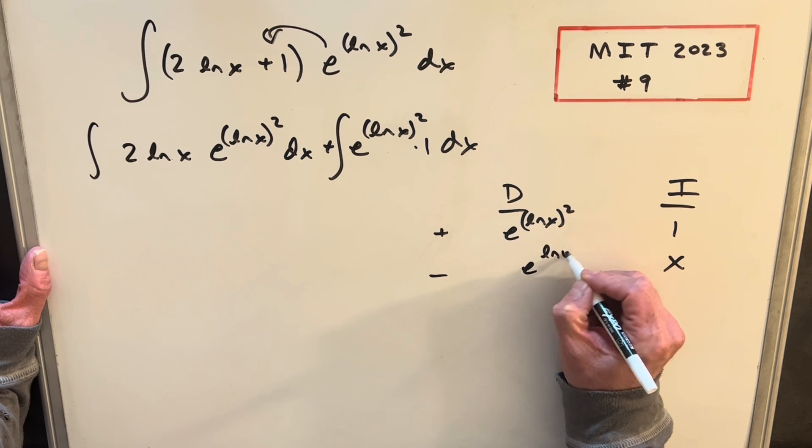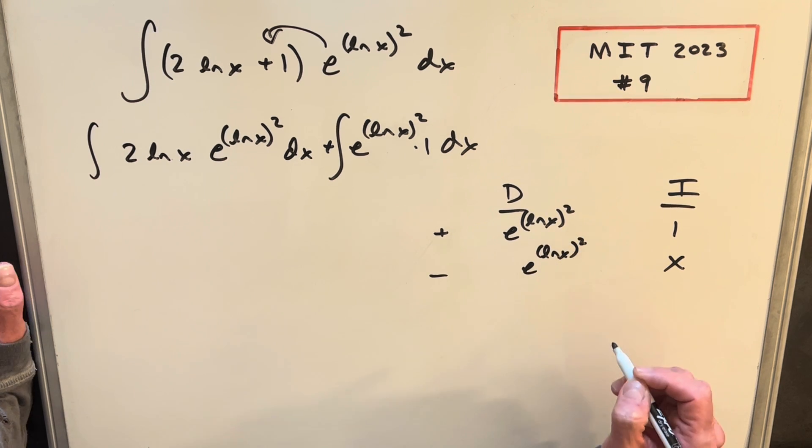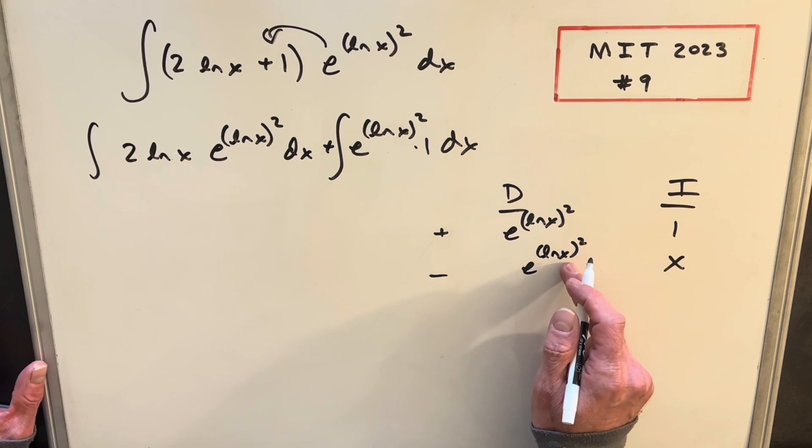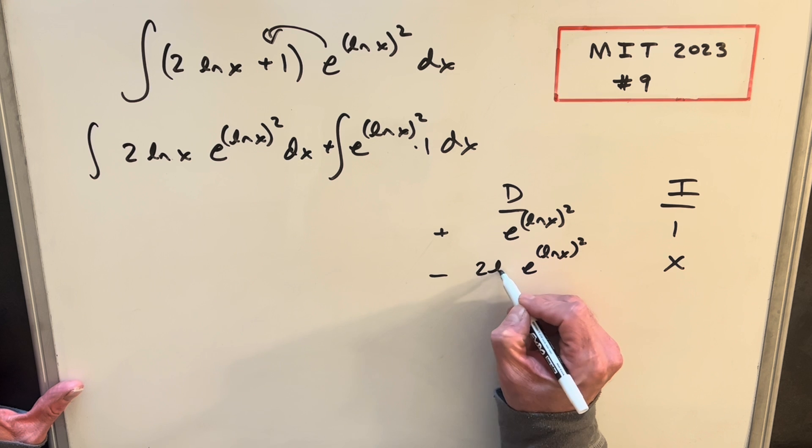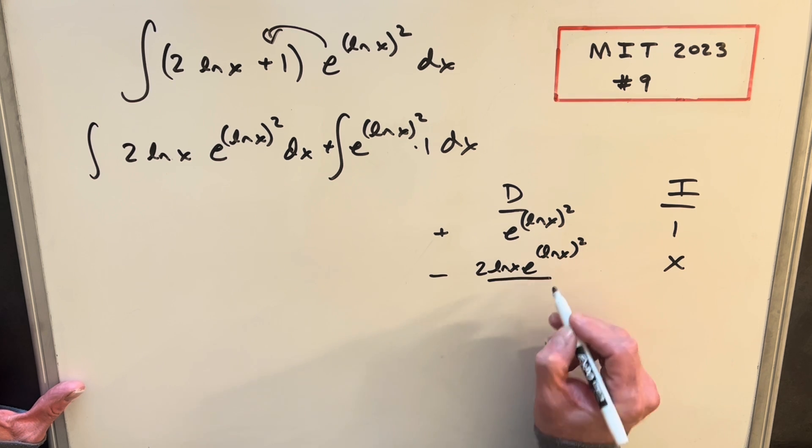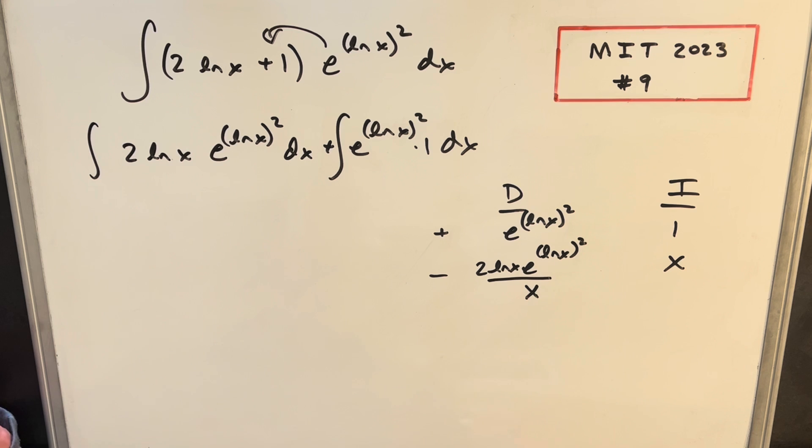The derivative of this is going to be e ln(x) all squared. So we kind of use the chain rule twice, because first we're going to have like the power rule. We're going to have, on the exponent, we're going to have 2 ln(x), but then we need the derivative of ln(x), which is going to put this all over an x.